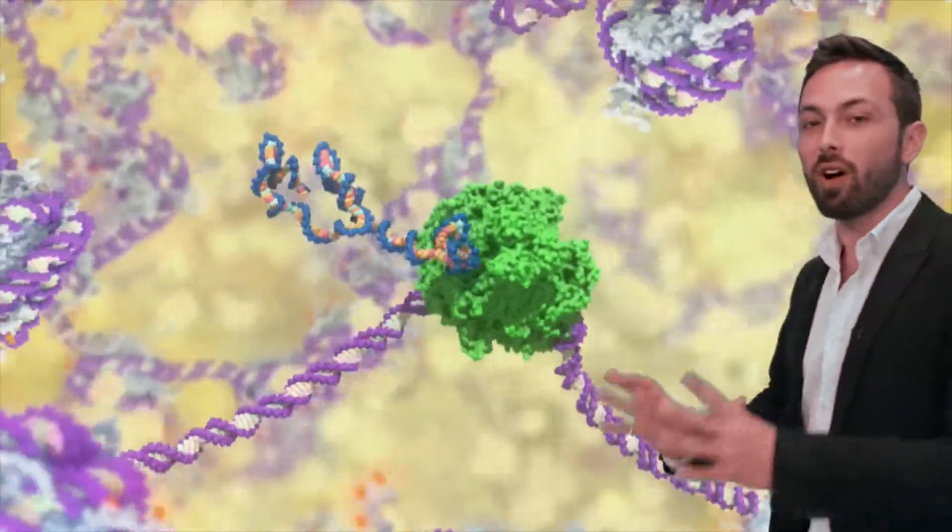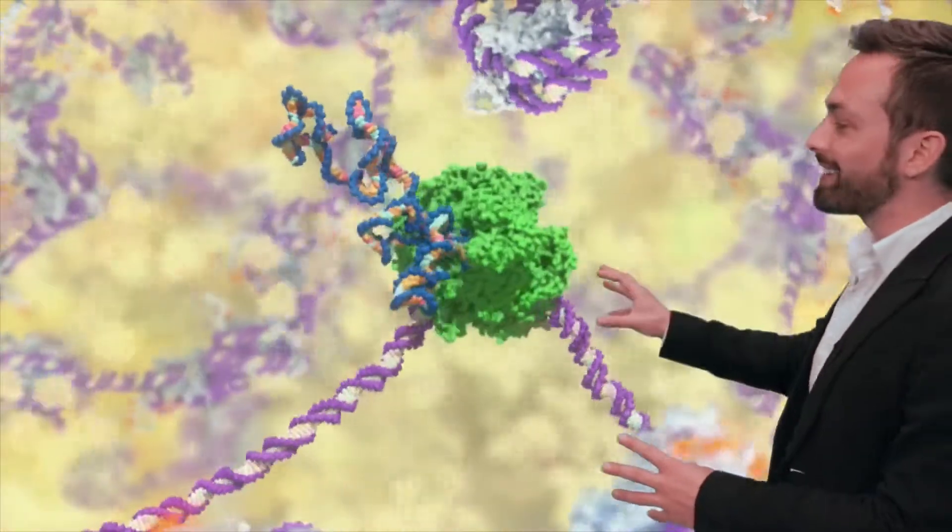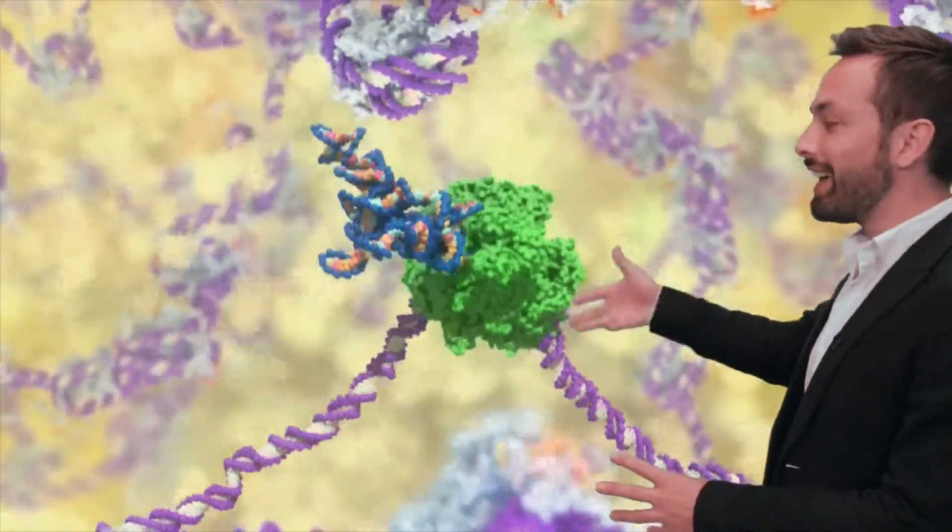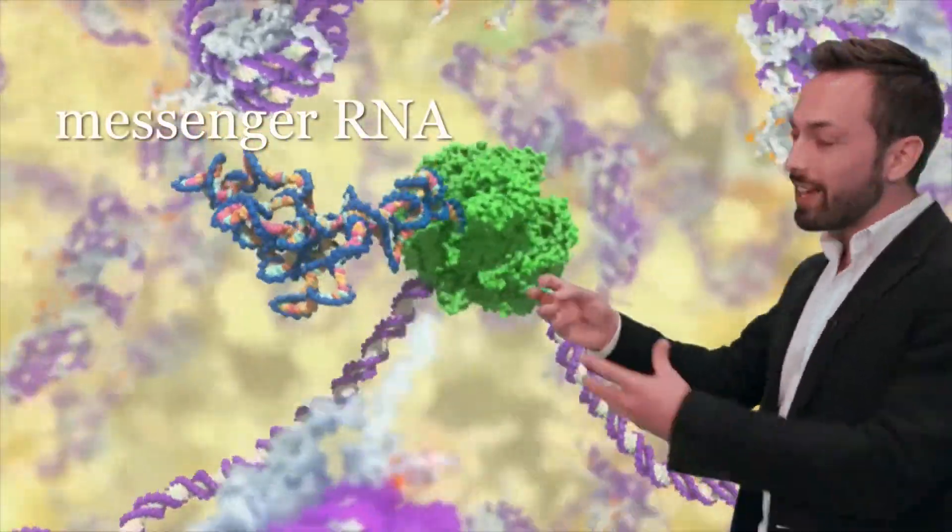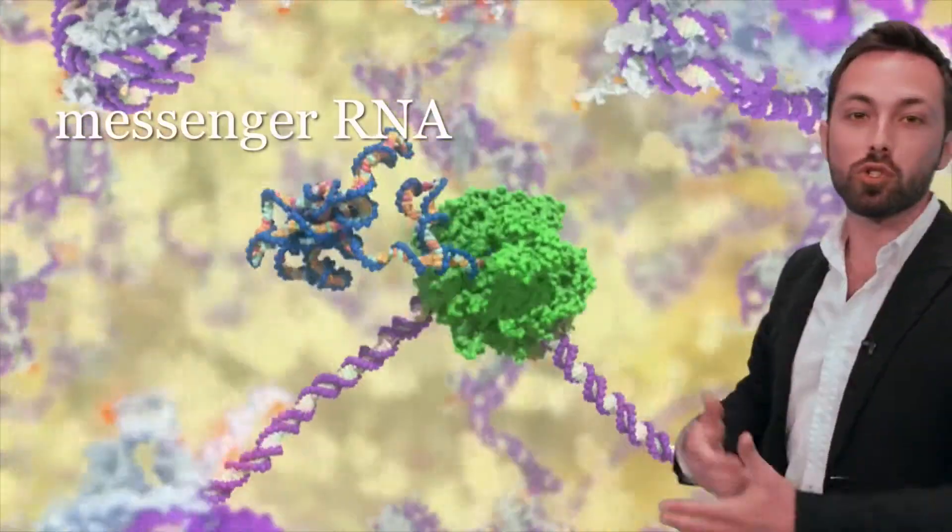Now all of this makes it possible for RNA polymerase to access and transcribe this DNA into messenger RNA, which then goes out into the cell and is used to make a protein.